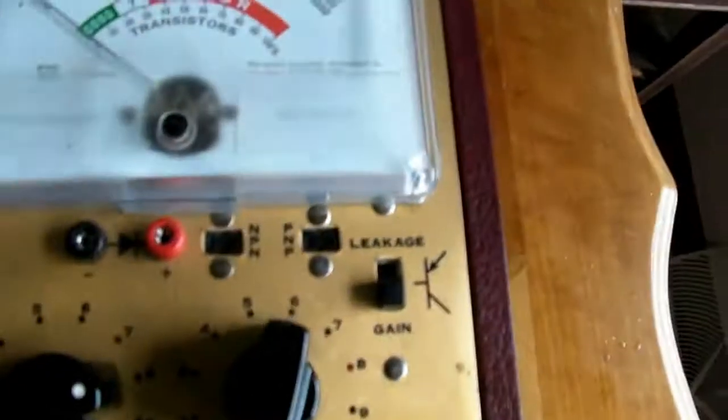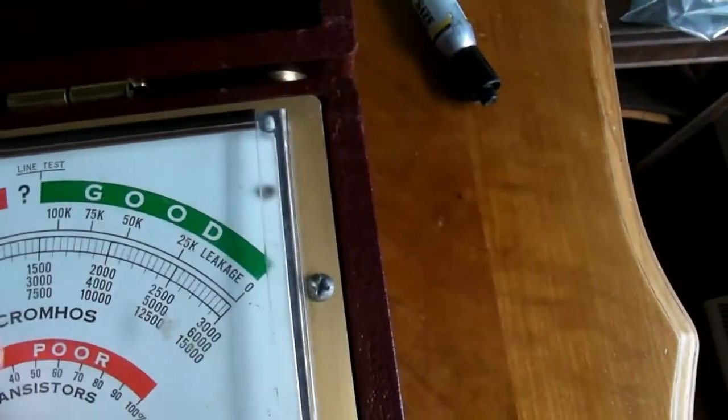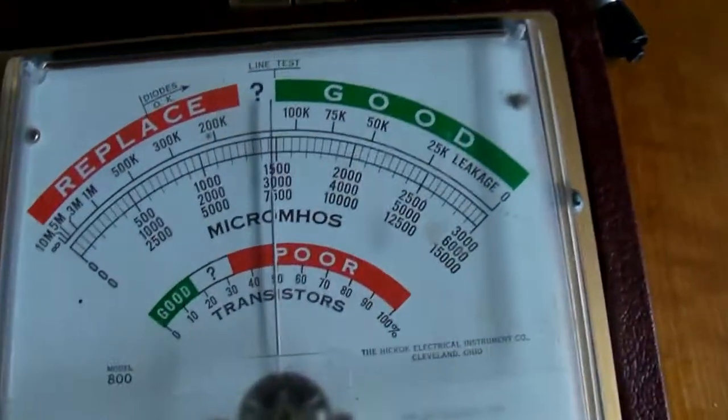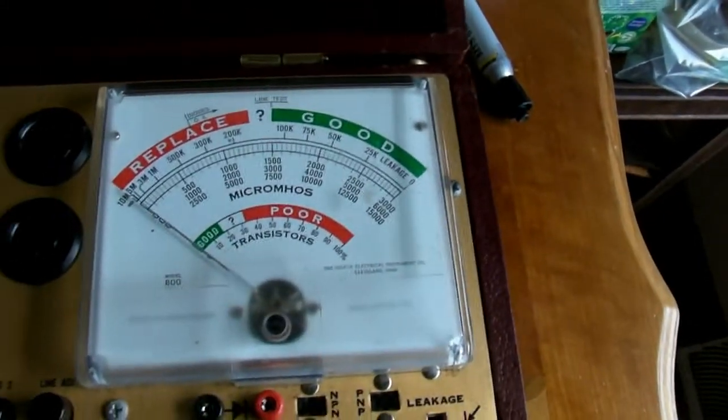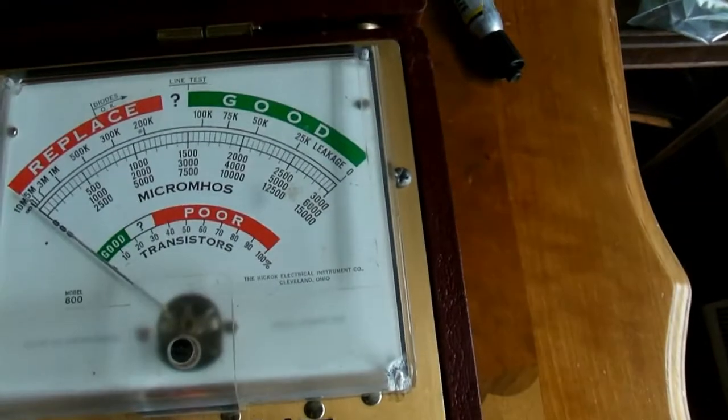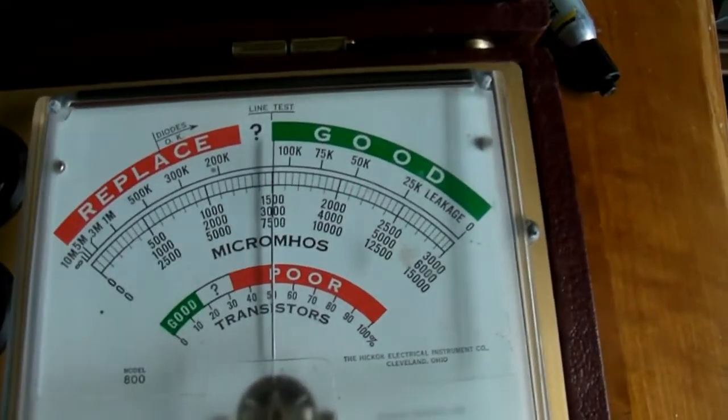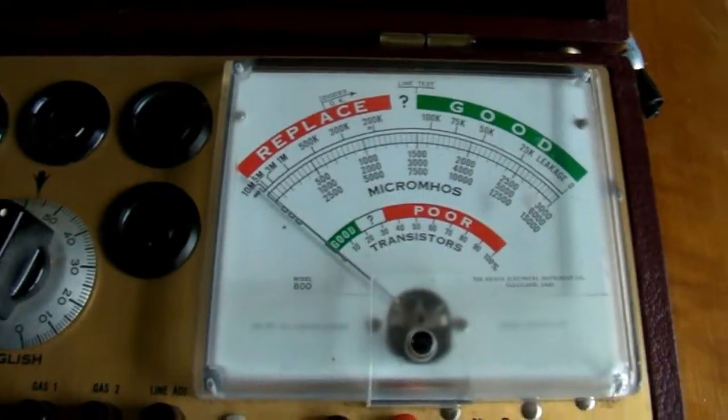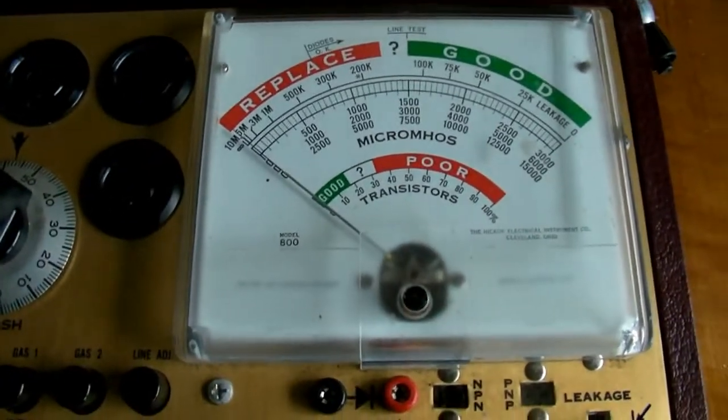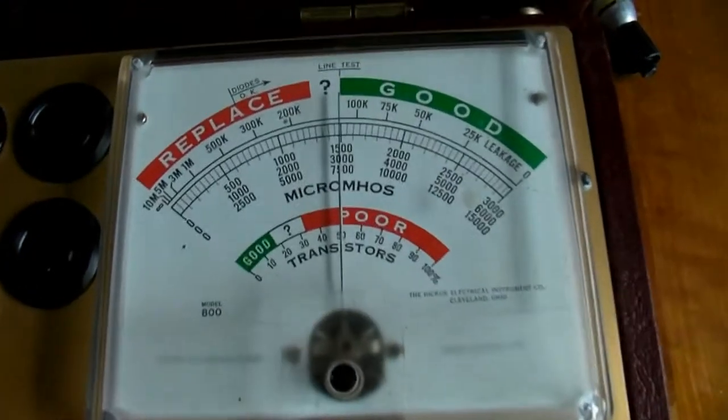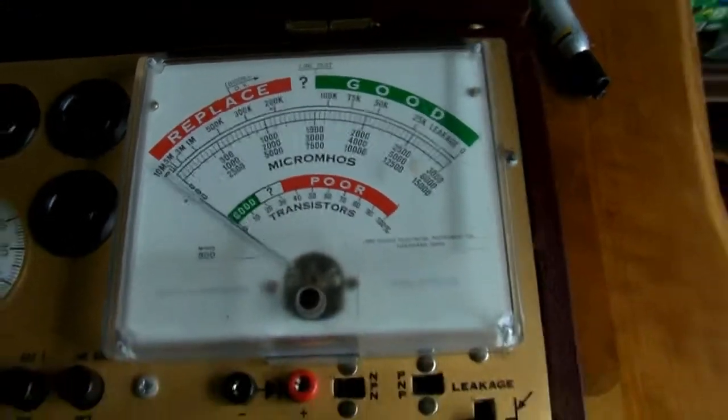I'm going to get the line test done. So you want the meter to show right on that line, just off a little bit. So I'm going to turn it just a bit. There's a rheostat in there so you can make that adjustment, compensate for your line voltage. Okay, that's on the line now.